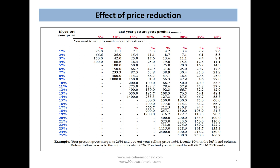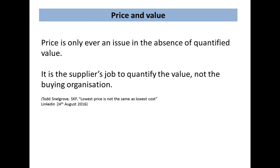A 10% discount means you have to double your sales. We have a crib sheet that Grant and I frequently use to save doing lots of calculations — if you look along the top line, find the 20% margin, then look down for the 5% discount, you'll locate the 33⅓%. To summarize: price is only ever an issue in the absence of quantified value, and it is the supplier's job to quantify the value — not the buying organisation.